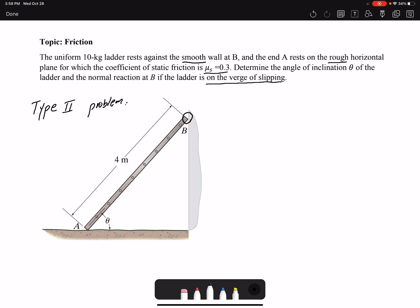The first step is to draw the free body diagram to see what known values and unknown values we have.